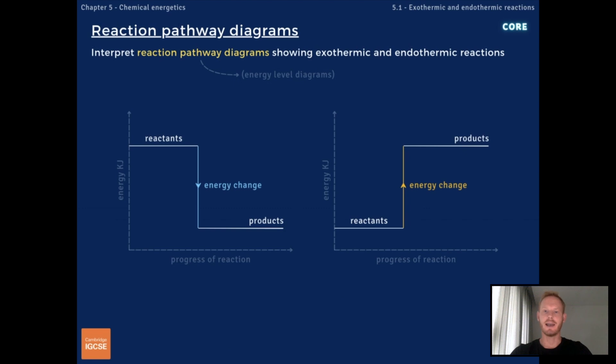Now, exothermic and endothermic reactions can be represented by reaction pathway diagrams, also known as energy level diagrams. These diagrams show the energy of the reactants and products, and the energy change as the reaction progresses.